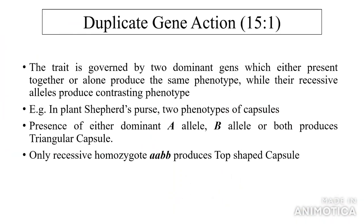Duplicate gene action: 15:1. The trait is governed by two dominant genes which, when present together or alone, produce the same phenotype, while their recessive alleles produce the contrasting phenotype. Example: in the plant shepherd's purse, presence of either dominant A allele, B allele, or both produces triangular capsule; only the recessive homozygote aabb produces top-shaped capsule.